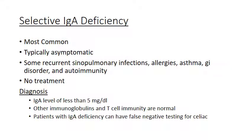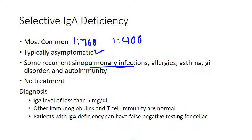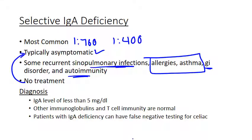Selective IgA deficiency is the most common B-cell immunodeficiency, occurring in about 1 in 700 live births — the lowest estimate I've seen is 1 in 400. It affects both men and women with variable inheritance. It's typically asymptomatic, but you may see some sinopulmonary infections, a higher incidence of allergies and asthma, gastrointestinal issues, and autoimmunity. There really isn't any treatment since it's largely asymptomatic — you just manage infections as they come.